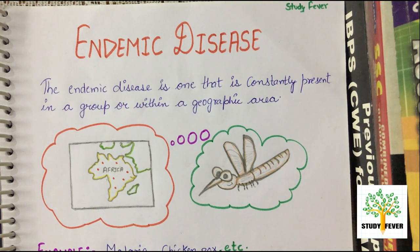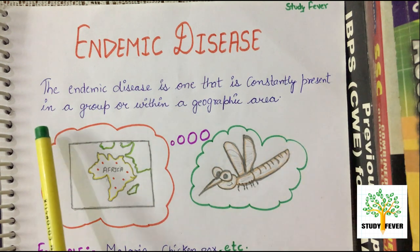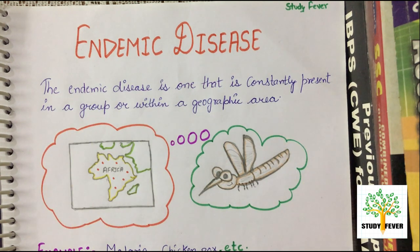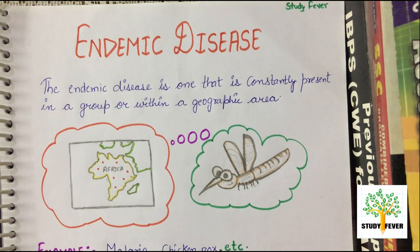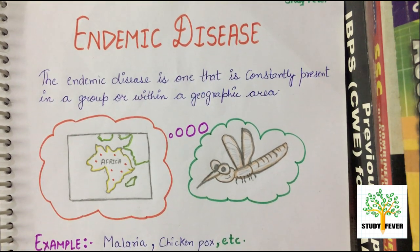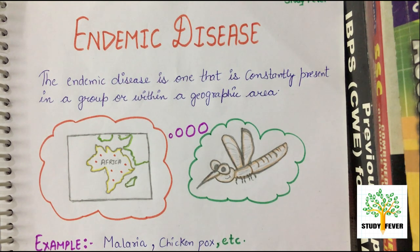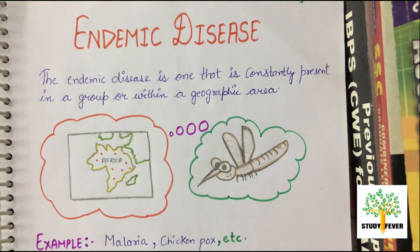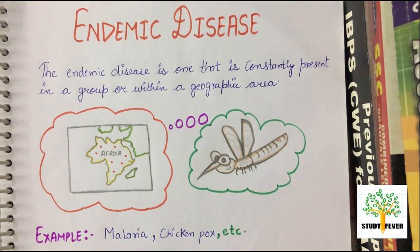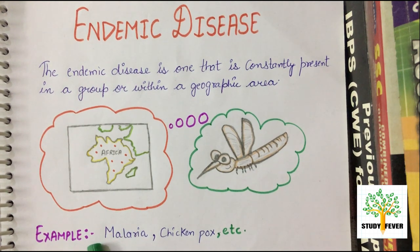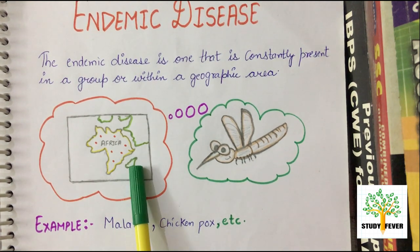Endemic disease is one that is constantly or permanently present in a group or within a geographic area. It refers to a particular state or region affected by the disease. For example, malaria or chickenpox are diseases we call endemic diseases.